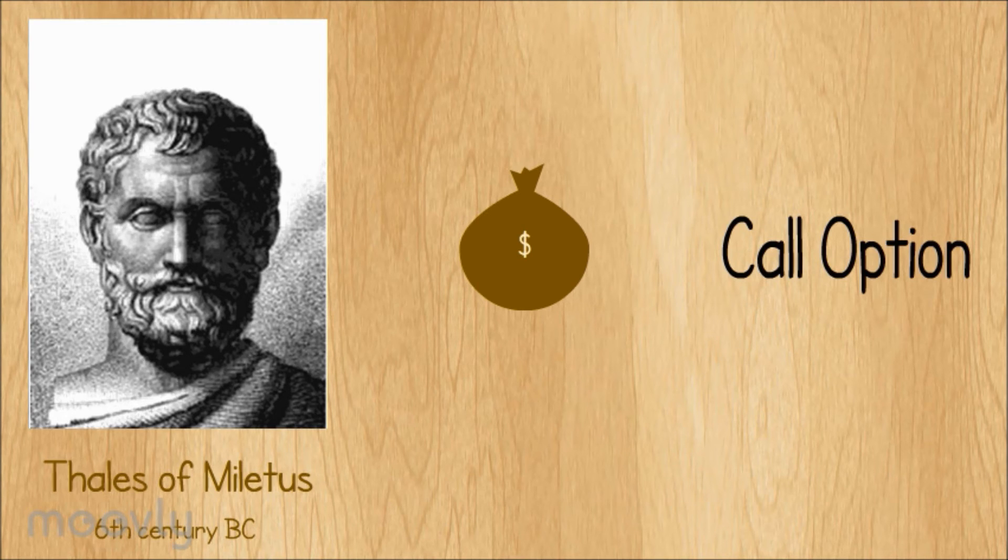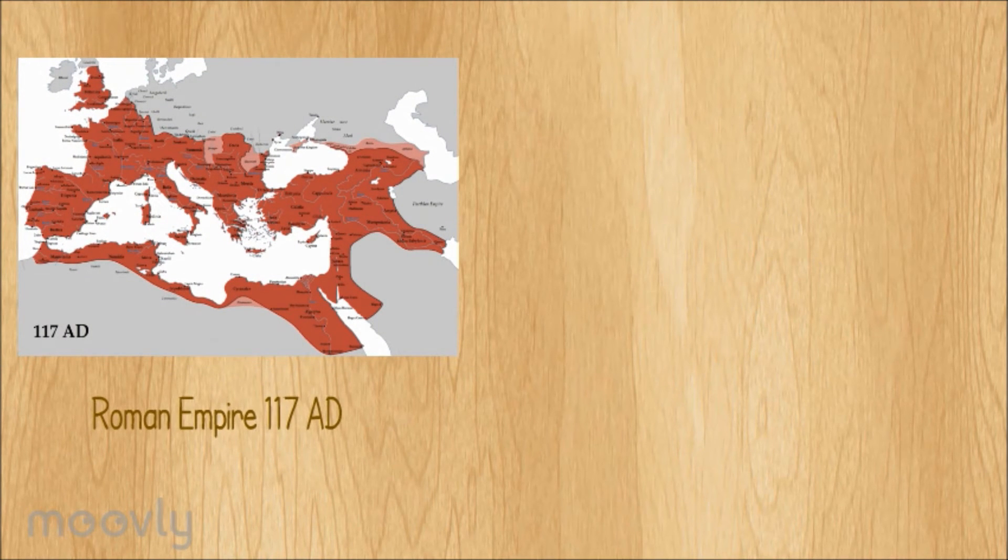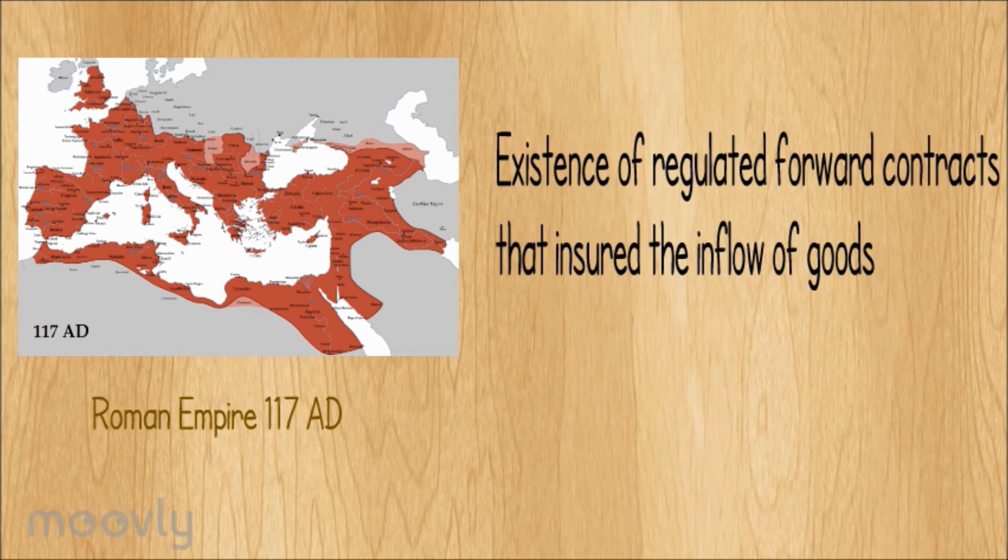During the Roman era, forward contracts were allowed as a tool to maintain the supply of commodities related to food. These contracts were regulated by the Roman law and were agreed upon in the commodity markets that were organized by the Romans.